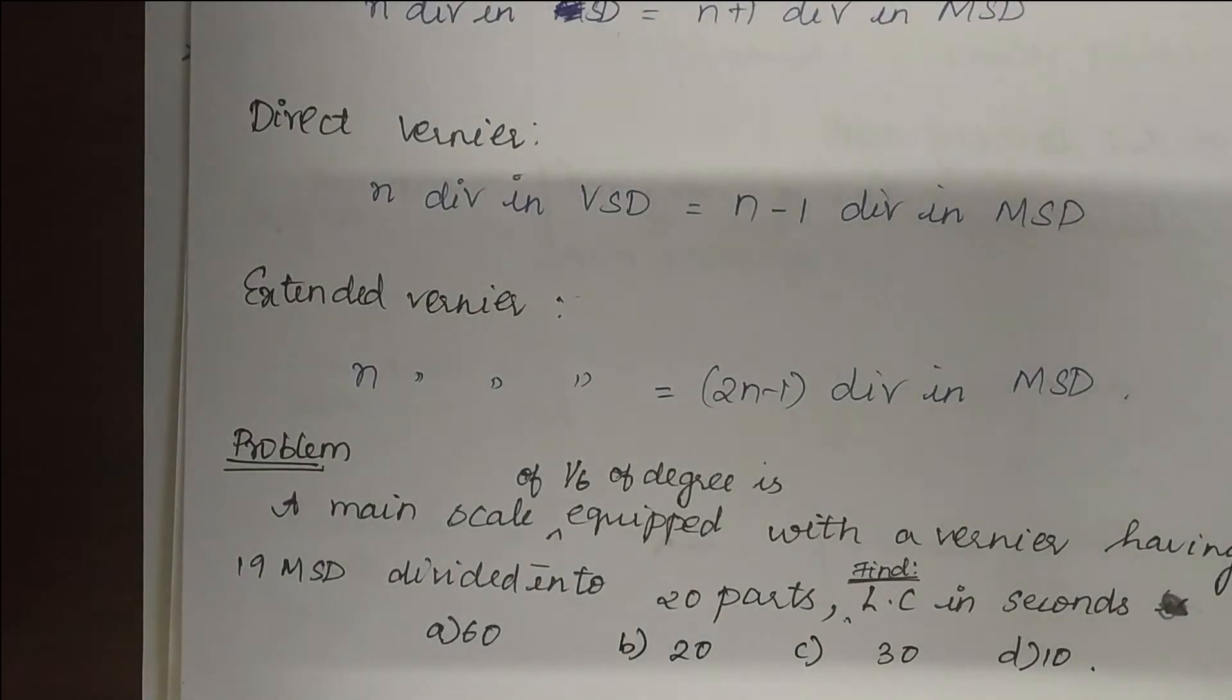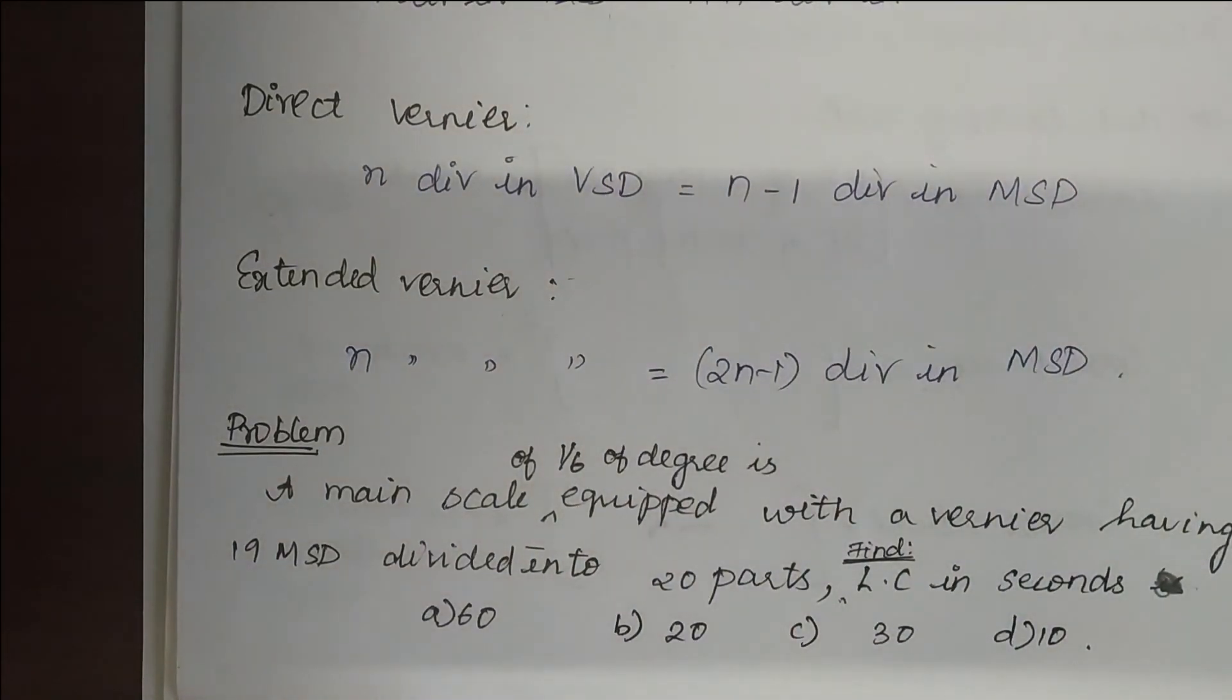Let me know the answer in the comments. So the question is, a main scale of 1/6th of a degree is equipped with a vernier having 19 main scale divisions divided into 20 parts. Find the least count in seconds. The choices are 60, 20, 30, and 10. Please find out the answer and let me know in the comments.